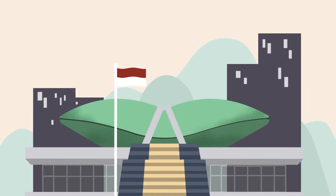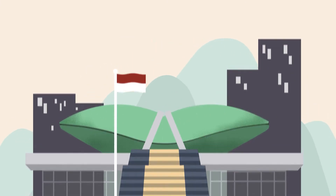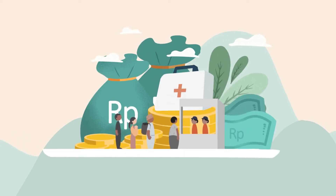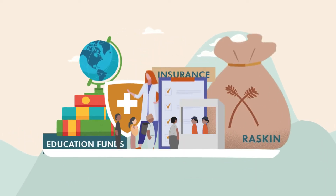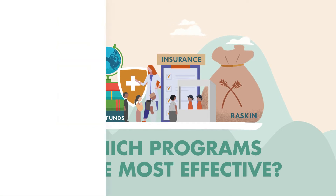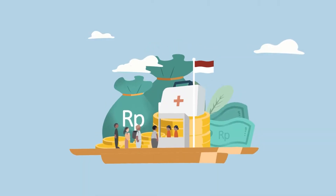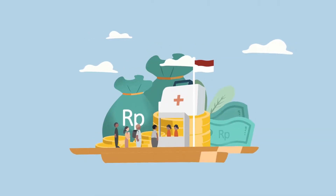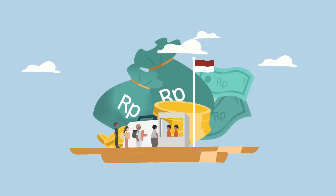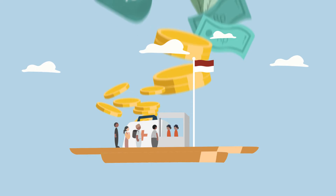Governments have implemented various social assistance programs to alleviate poverty, but they have a very difficult question to answer: which programs are most effective? Furthermore, how do they ensure that funds intended for social assistance programs are not lost to corruption or leakage, or that they are reaching the right people?